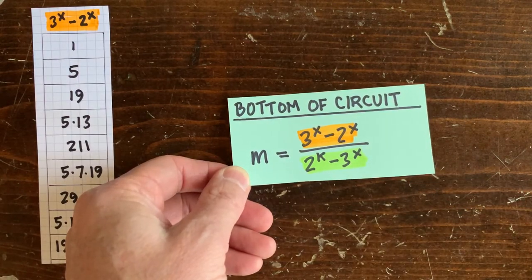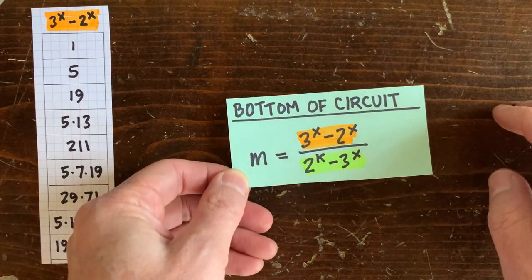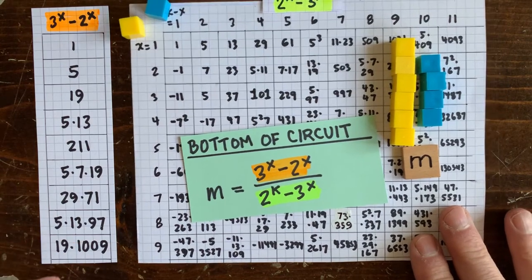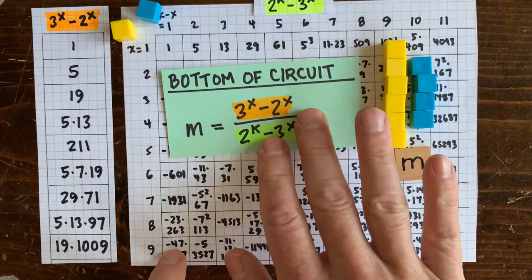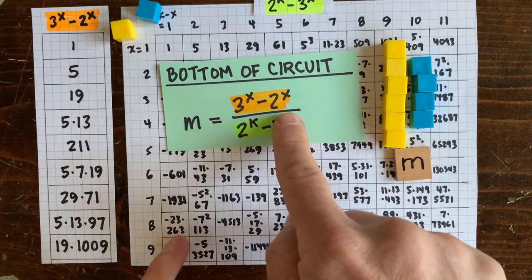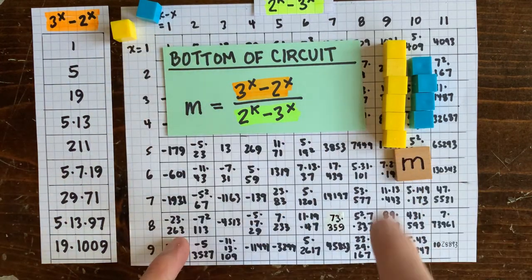On the left we've got the values of 3 to the x minus 2 to the x, and here we've got the values of 2 to the k minus 3 to the x. Along the left side is the number of up moves, along the top is the number of down moves. So here we've got a circuit with 6 up moves and 4 down moves.